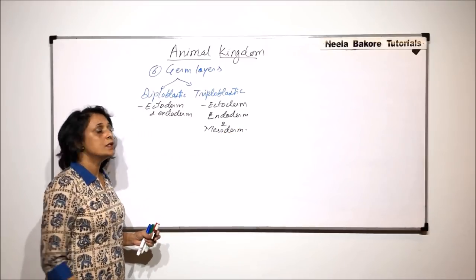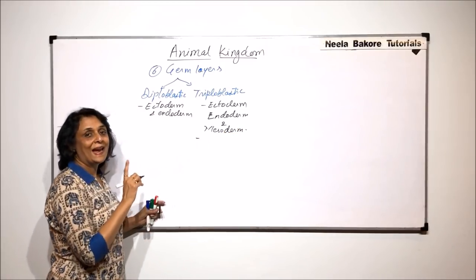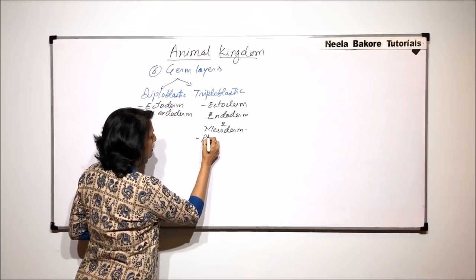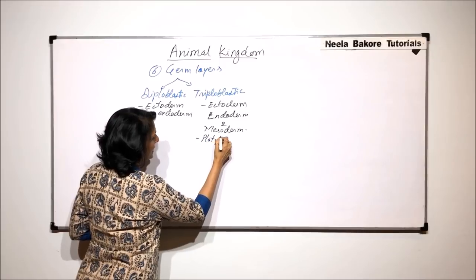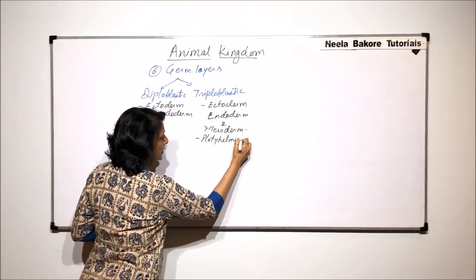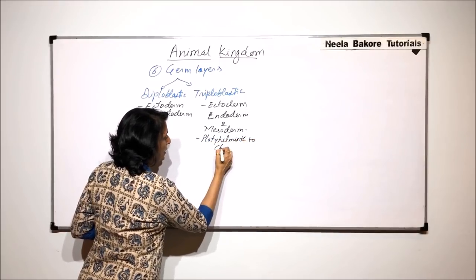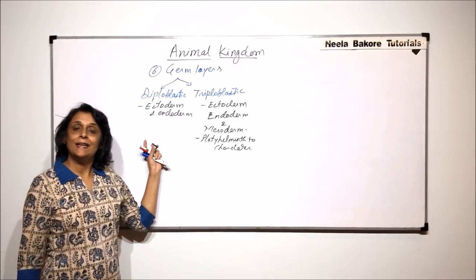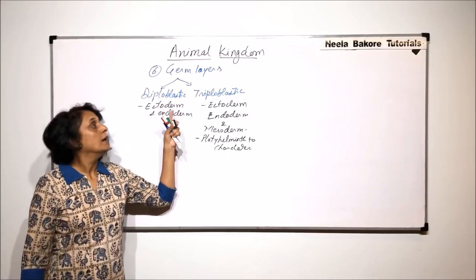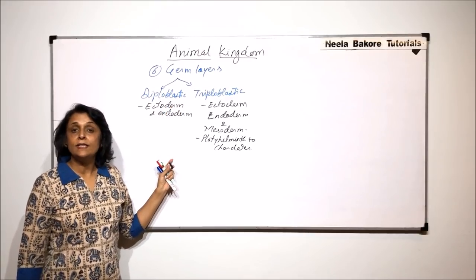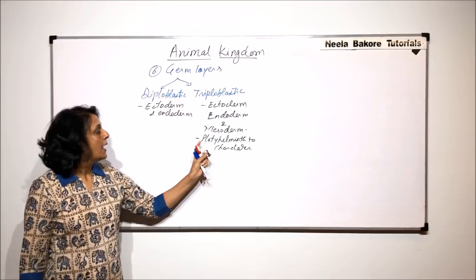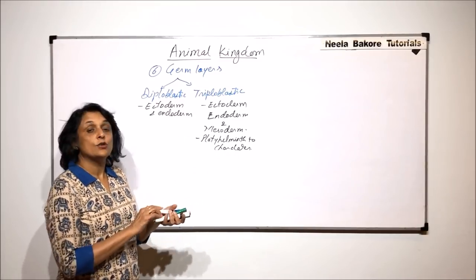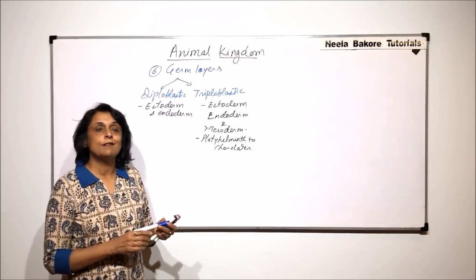The animals from platyhelminthes to chordates are triploblastic. The animals which come before platyhelminthes fall under diploblastic animals. So this is also one way of classifying animals.